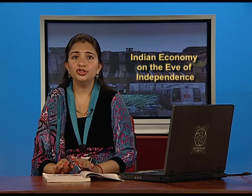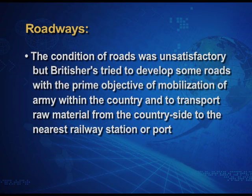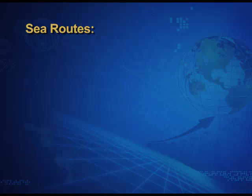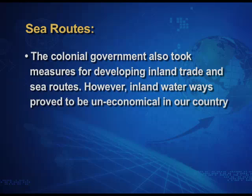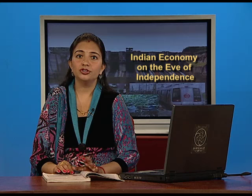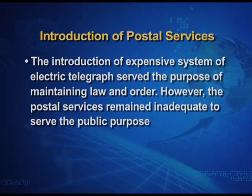The condition of roads in India was unsatisfactory, but the British tried to develop some roads. The prime objective was the mobilization of the army within the country and to transport raw material from the countryside to the nearest railway station or port — raw material that was going to British industries. The colonial government also took measures for developing inland trade and sea routes; however, inland waterways proved to be uneconomical. The introduction of the electric telegraph served the purpose of maintaining law and order, though postal services remained inadequate to serve the public.